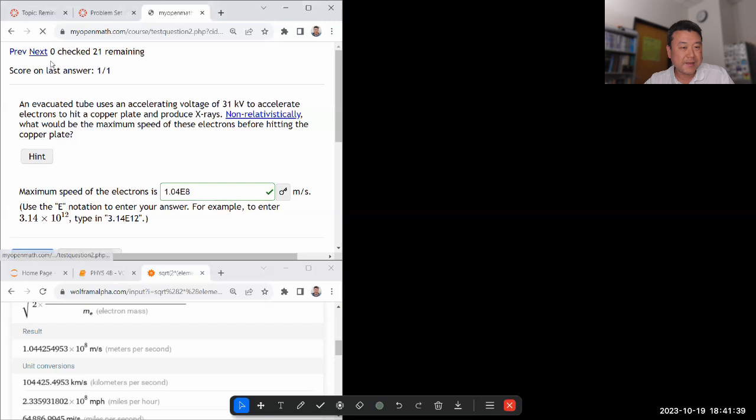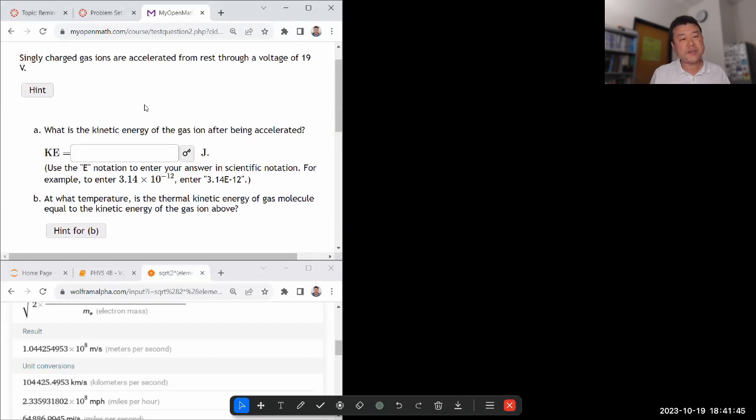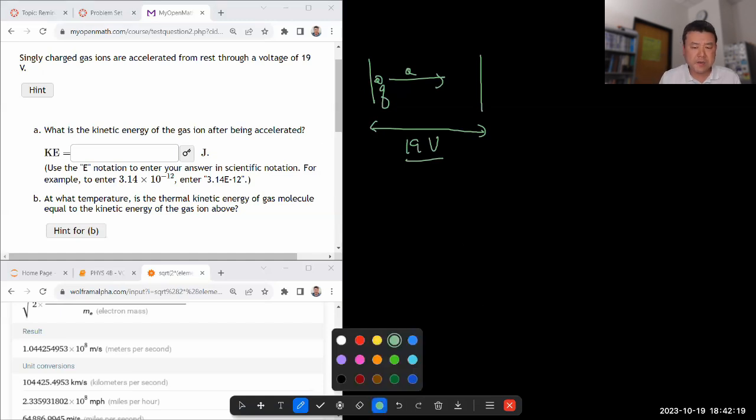Okay, let's look at the next question. 1-4, I think. It says, singly charged gas ions are accelerated from rest through a voltage of 19 volts. This sounds like a similar setup as the other one. So I have some charges, which has some mass and some charge. And it's going to start from rest and get accelerated through until it reaches some other electrode that's going to be at 19 volts. Okay, what is the kinetic energy of the gas ion after being accelerated? Okay, so there are some kind of underlying assumptions used to state explicitly and understand where that comes from.